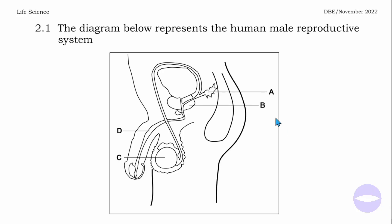The question says: the diagram below represents the human male reproductive system. We have been told this is a male reproductive system and we can see the testes here. Before going to the questions, let me label the parts that are given.